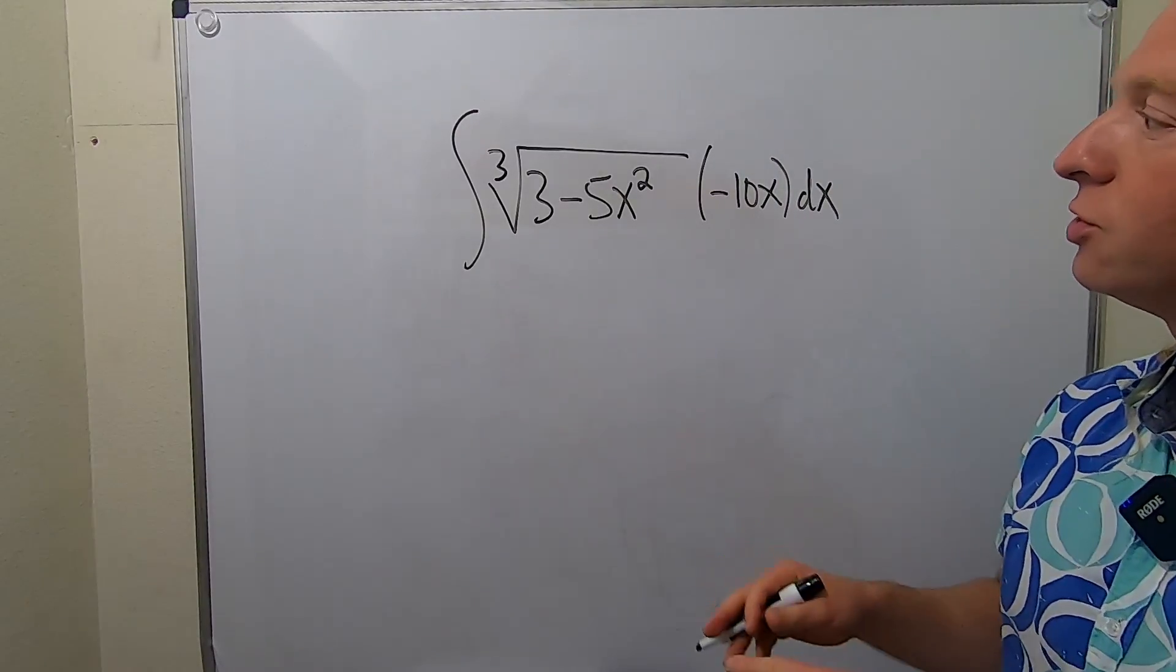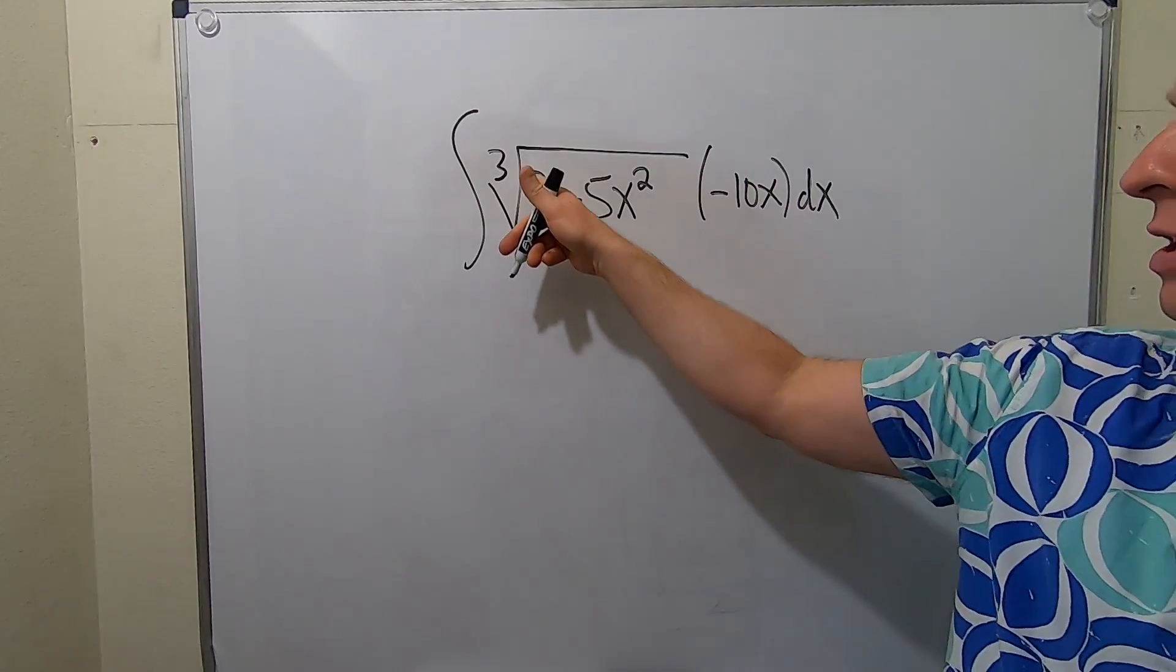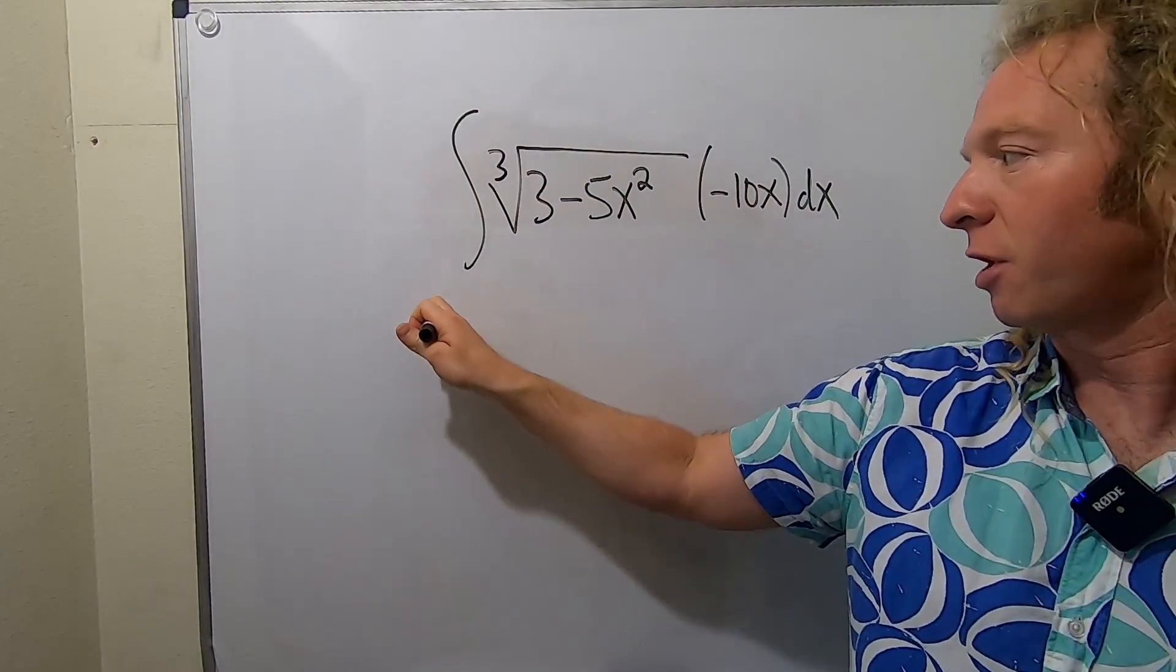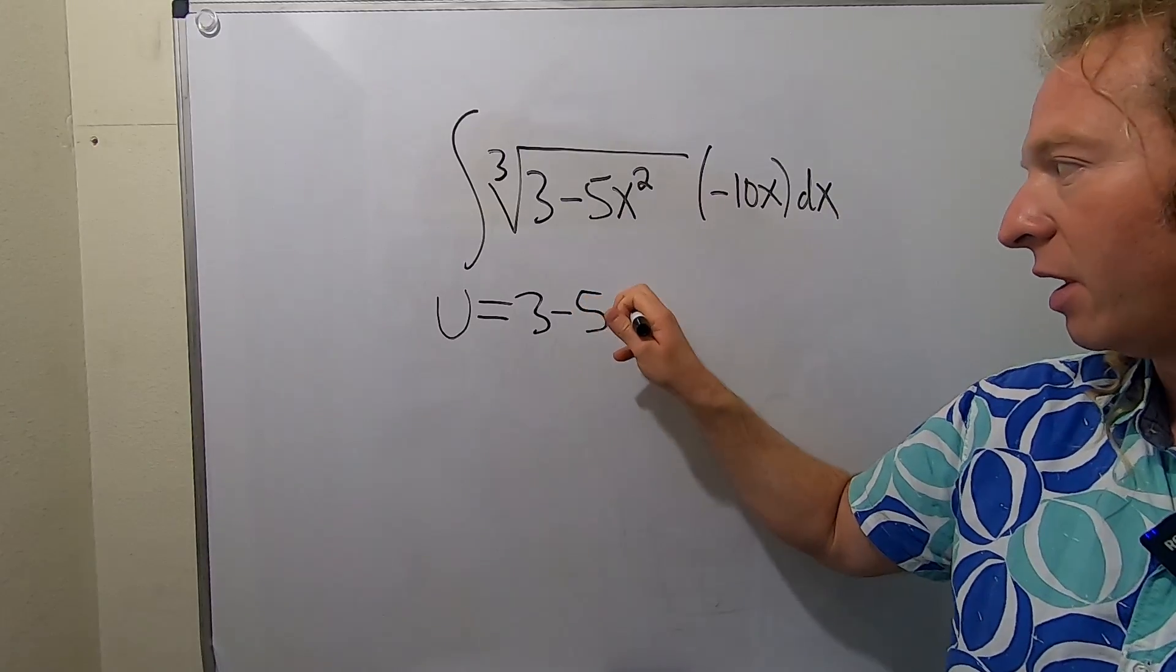So when you use u-substitution, your u is usually like your inside function. In this case, the obvious choice for u is going to be whatever's in the root. So we'll start by letting u be equal to 3 minus 5x squared.